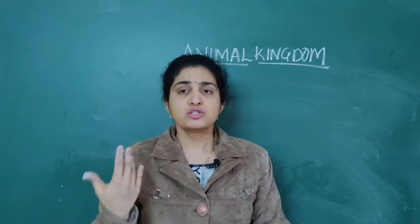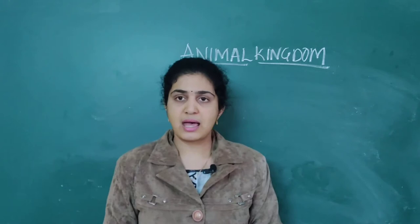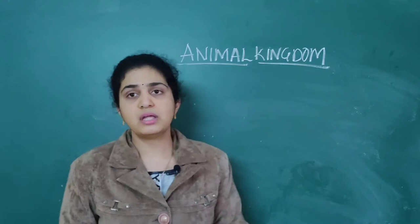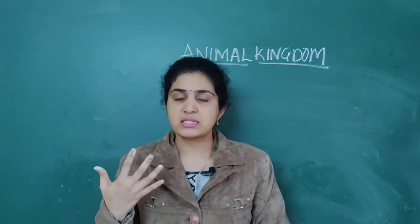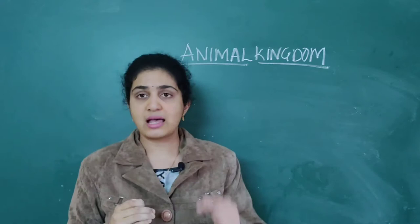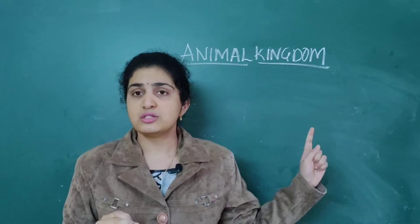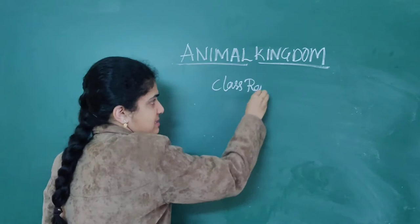Hi students, I'm Dr. Bhavna. In this lecture we are going to deal with the continuation of the chapter called Animal Kingdom. In the last class we already covered the class of Amphibians, class Chondrichthyes, and Osteichthyes. Today we are going to continue with class Reptiles as well as class Aves. Reptiles include organisms such as snakes and crocodiles — numerous crawling and creeping organisms.